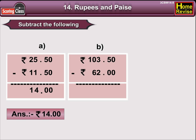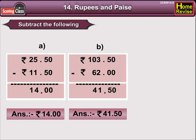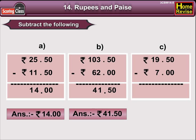Now, the B part. Rupees 103 and 50 paisa minus Rupees 62. Now, 0 minus 0 is 0. 5 minus 0 is 5. In the Rupees column, 3 minus 2 is 1. Now, we have to subtract 6 from 10, so it is 4. The answer is Rupees 41 and 50 paisa.